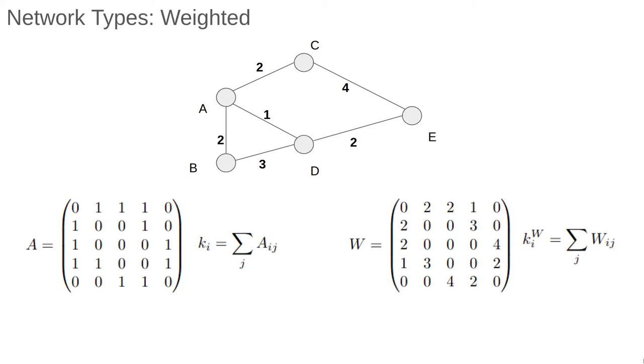However, for a weighted network, it's usually more useful to work with a weighted degree, which is the sum of the weights of all the edges connected to a node. This is so common that unless otherwise stated, when I say degree for a weighted network, I'll always mean weighted degree and I'll typically drop the superscript w.